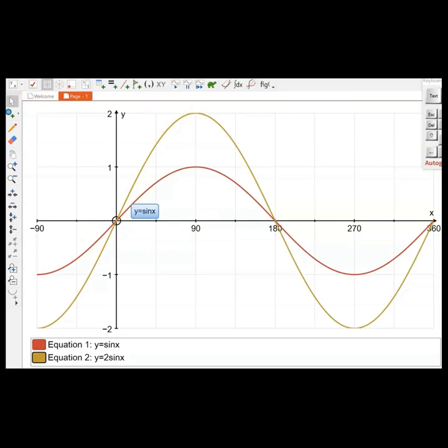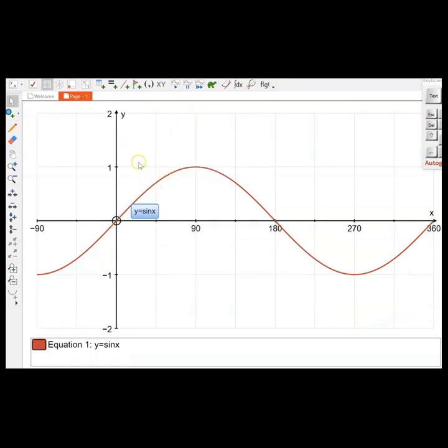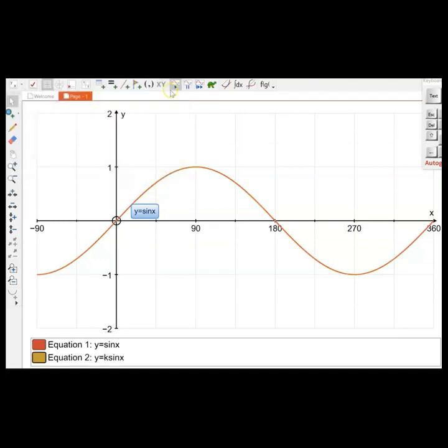Now we're going to change the constant. Instead of a definite number like 2, we're going to change it to any number. We're going to enter an equation again, and this time we'll put a letter in place of the constant. In this case we have k, so y equals k sine x, k a constant for any number. We're now going to click on the constant controller to control all these constants we're going to put in front of our function.